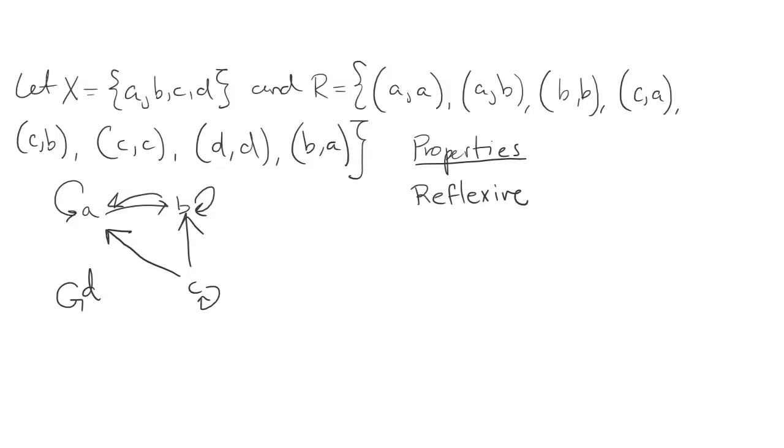The relation is also transitive. And in order to understand that we need to look at the paths that we have in the relation. Well we have a path from C to B to A, and then we also have the direct arrow from C to A, so we're good on that one. We have the path from C to A to B, and we also have the direct arrow from C to B, so we're good on that one.